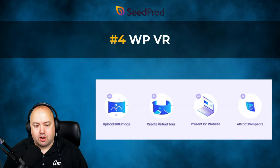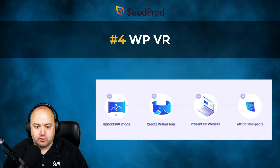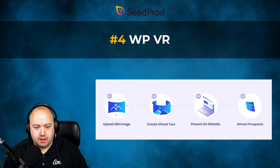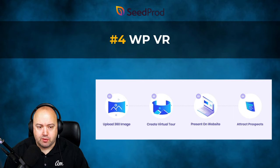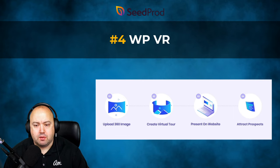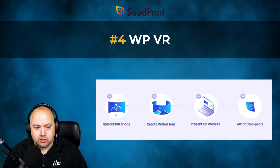Number four on our list is WPVR, a 360 panorama and virtual tour builder for WordPress that lets visitors take a virtual tour of a location remotely from your website. Simply upload a panoramic image and the plugin turns it into a 360 virtual tour. To keep visitors engaged, you can add interactive hotspots with text, images, GIFs, URLs, videos, and buttons. You can also customize colors, ripple animations, and choose from 900+ custom hotspot icons. Embedding your tour is easy with dedicated WordPress blocks, shortcodes, and elements for Elementor, Visual Composer, and Oxygen Builder.